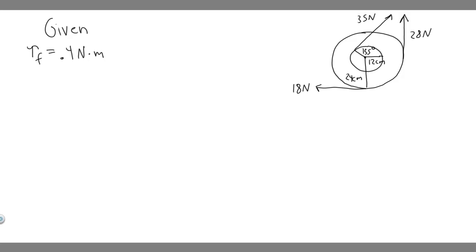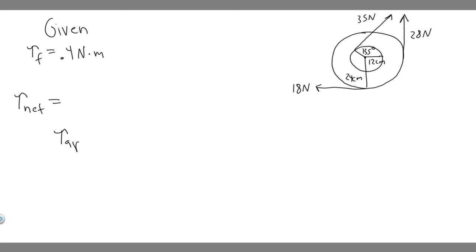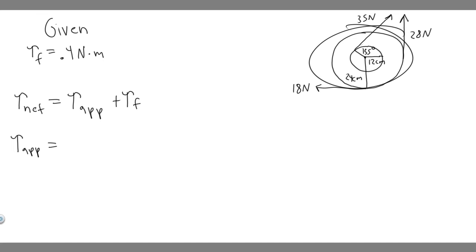We're trying to find the net torque. The net torque is going to be equal to all of our torques added up — the torque from the applied forces plus the torque from friction. They tell us the friction torque, but we need to find the applied torque, which is the main part of this problem.